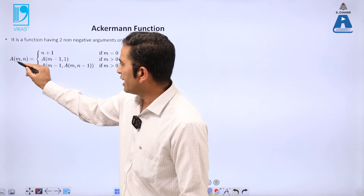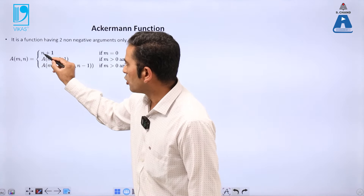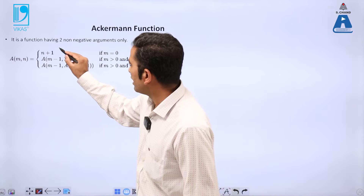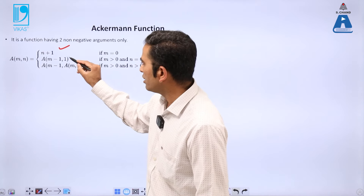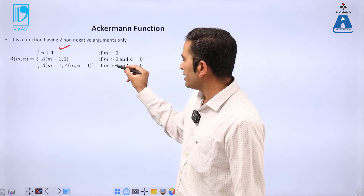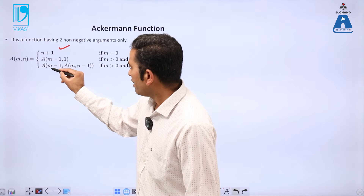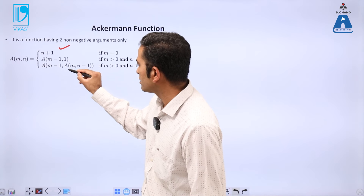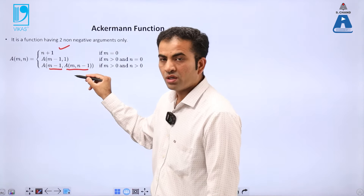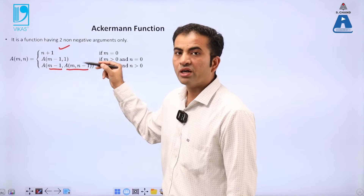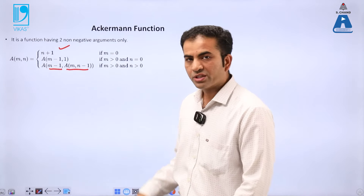A is the name of the function; M and N are the two arguments. If M equals 0, the output is N plus 1. If M is greater than 0 and N is greater than 0, the output is A(M−1, A(M, N−1)). The second parameter is itself a function call — this is called nested recursion.